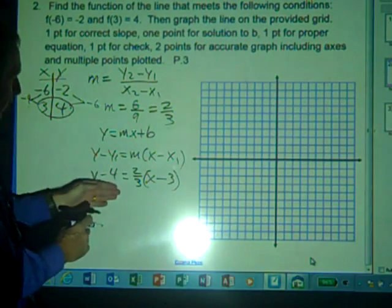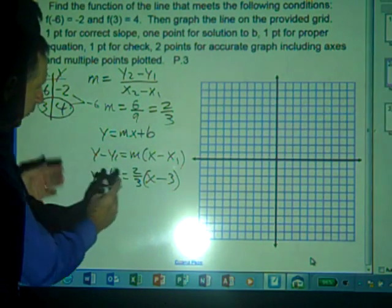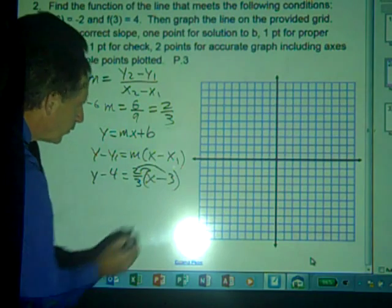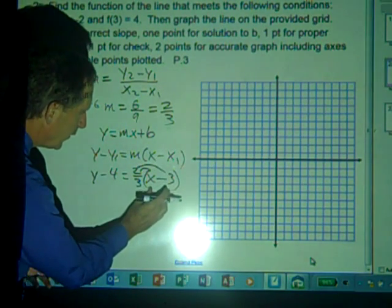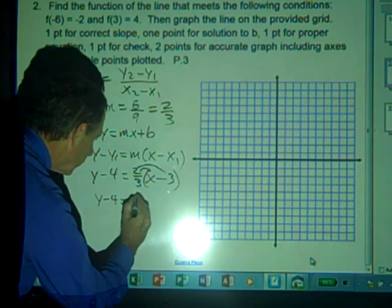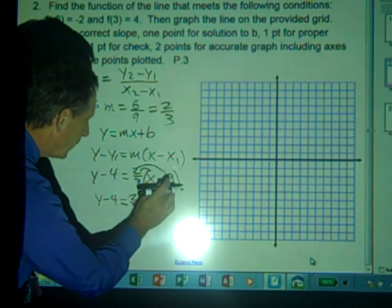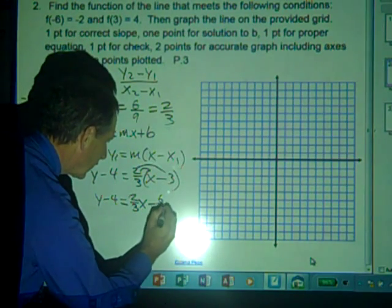Now we're going to convert this equation to slope-intercept form. To do that, we're going to first distribute 2 thirds to both terms inside parentheses. So we get y minus 4 equals 2 thirds x minus, and 2 times negative 3 will be negative 6 over 3.